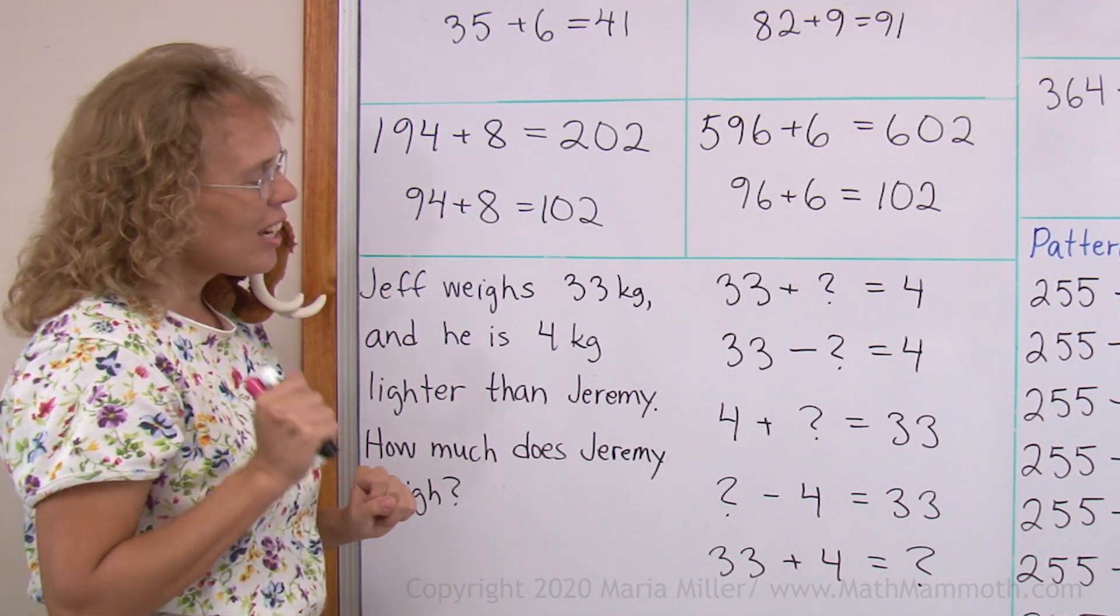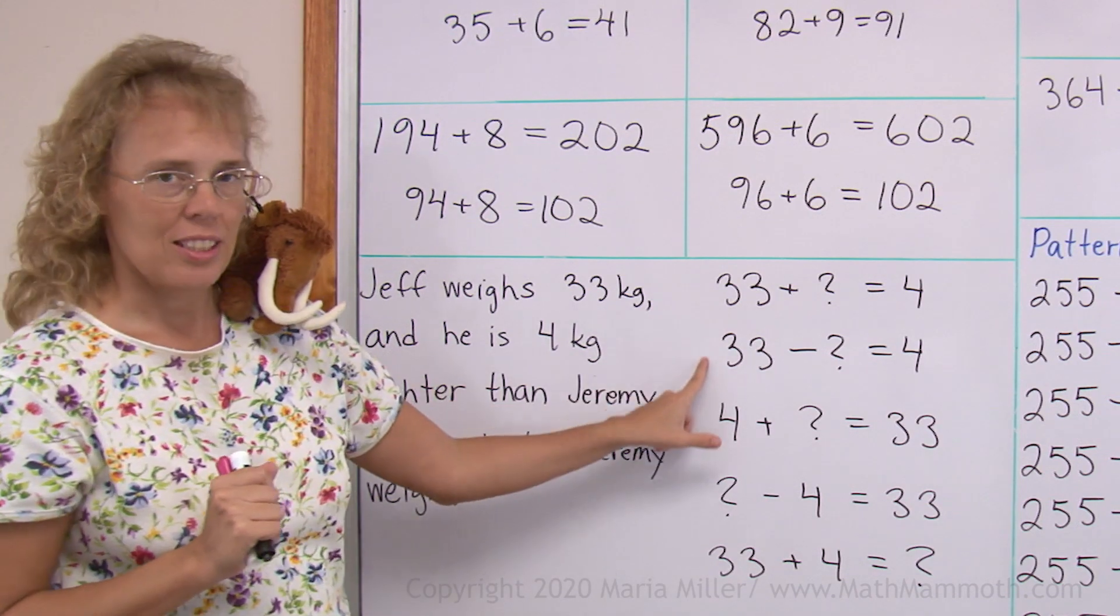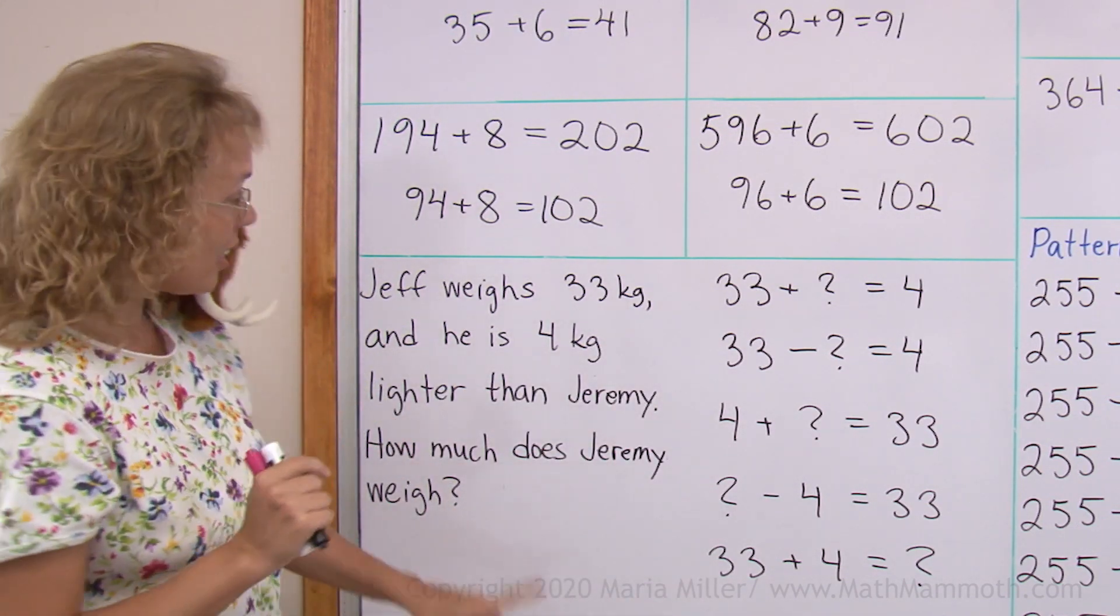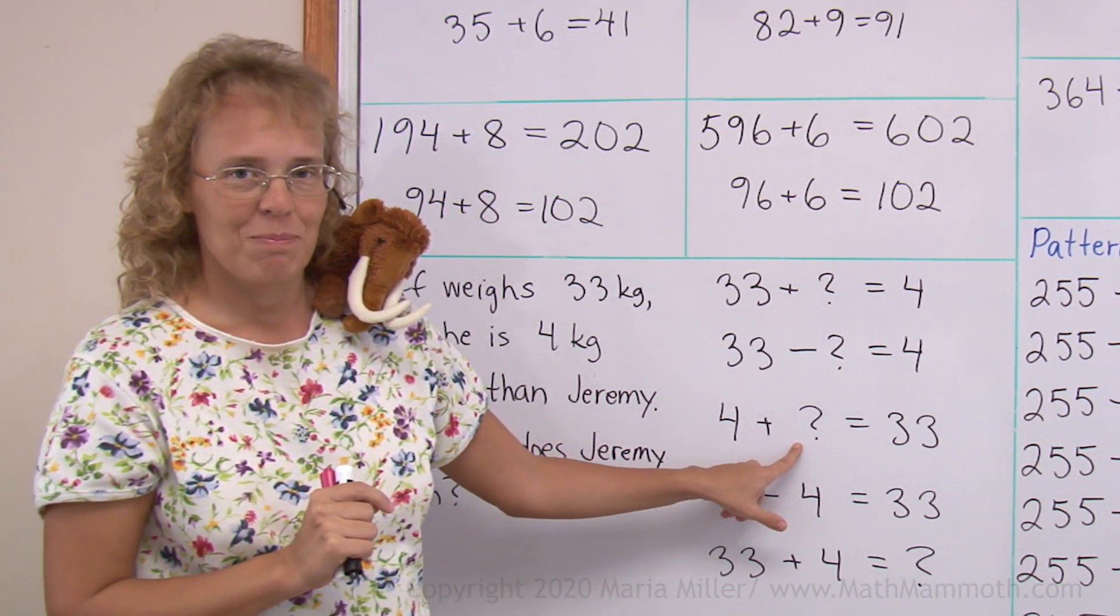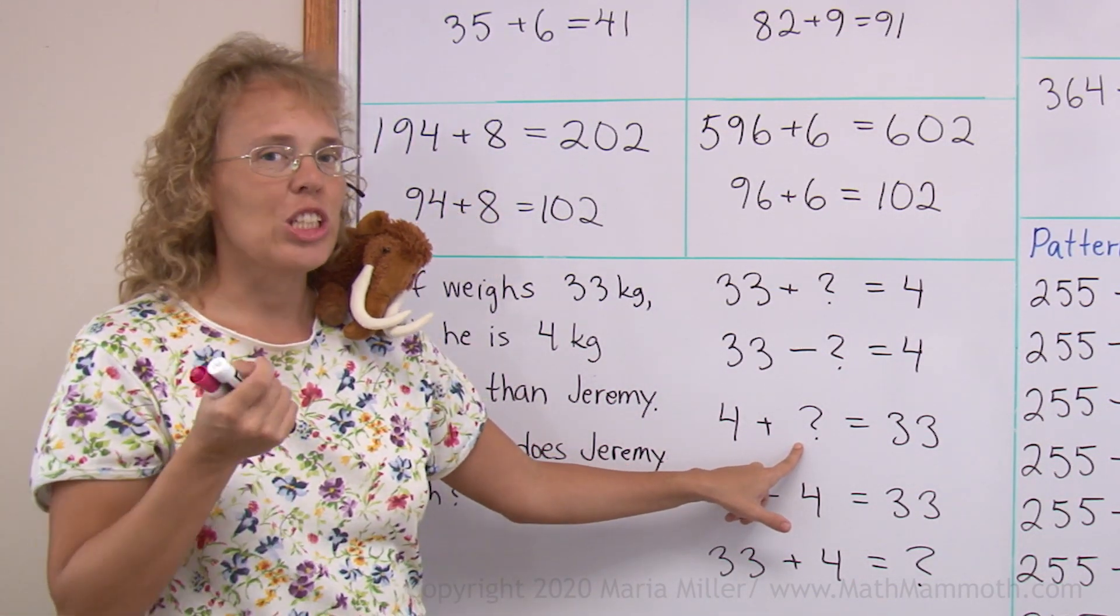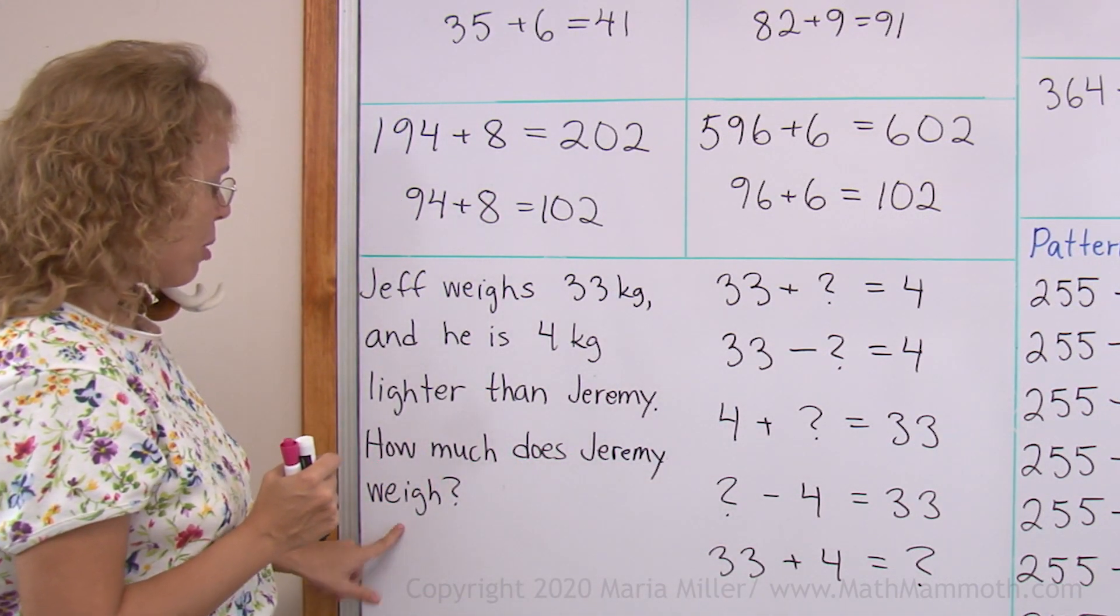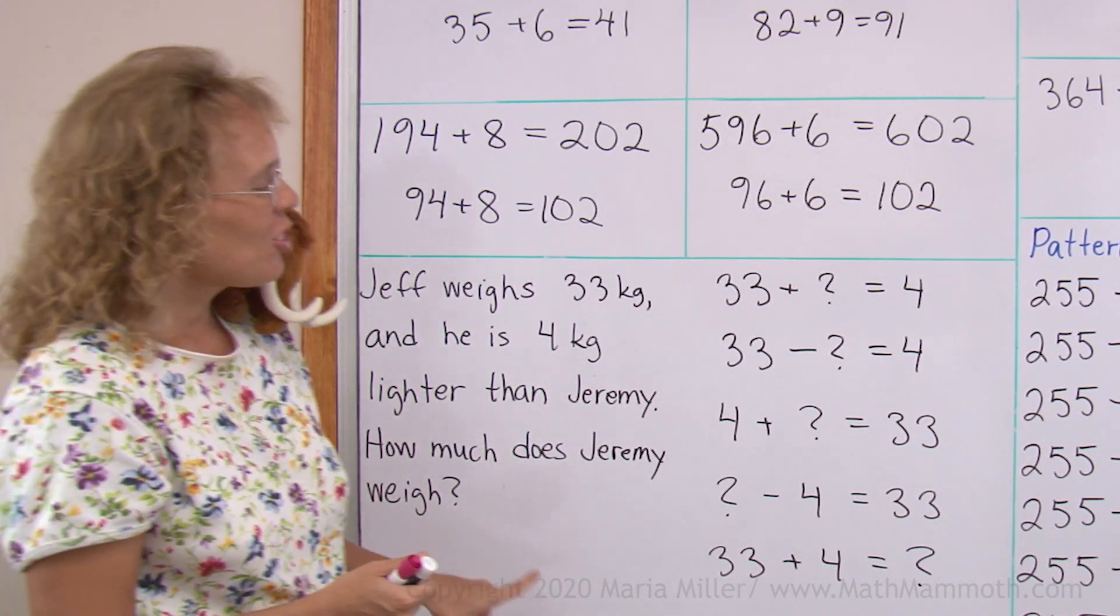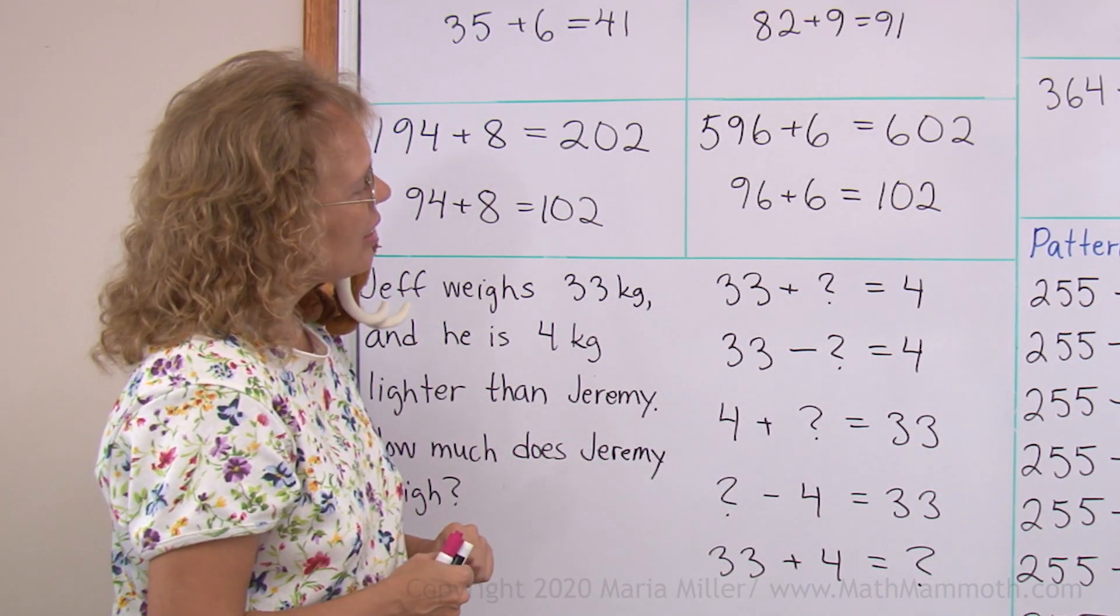And our task here actually is to choose which one of these number sentences, these additions and subtractions, would match this problem. And notice there's these question marks. And that's my unknown. That's what I don't know. That's what the problem is asking. The problem asks, how much does Jeremy weigh? Question mark, okay? So Jeremy's weight is the number that would go here in place of the question mark.